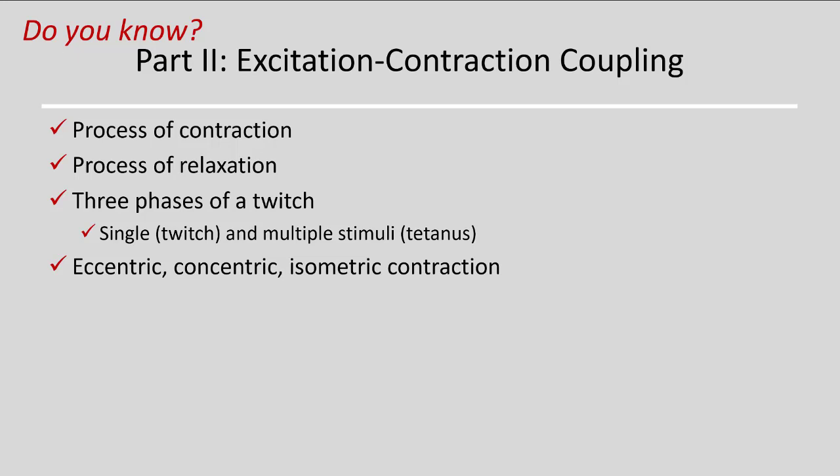You should know the three phases of a twitch: the latent period where calcium dynamics and tropomyosin movement occur, the contraction phase where cross-bridges form, and the relaxation phase. You should know how to achieve greater force — through wave summation by rapidly stimulating before full relaxation, or through tetanus where maximal stimulation prevents any relaxation and produces maximal force. You should also know the difference between eccentric, concentric, and isometric contraction.